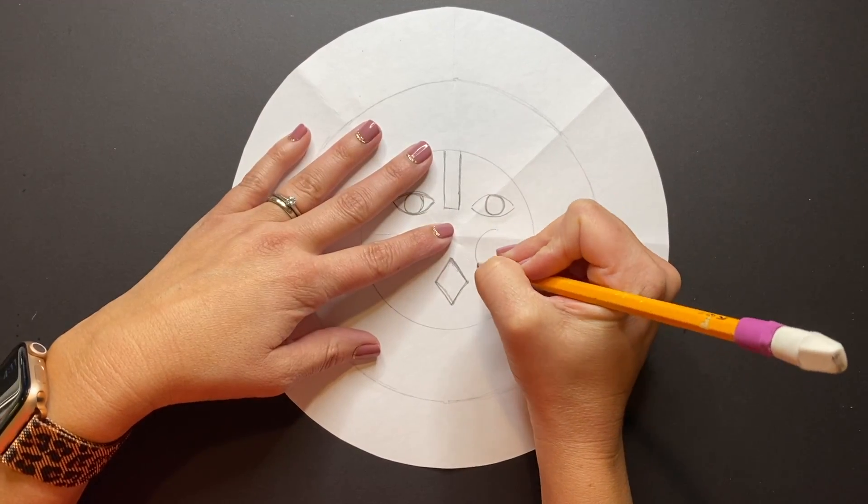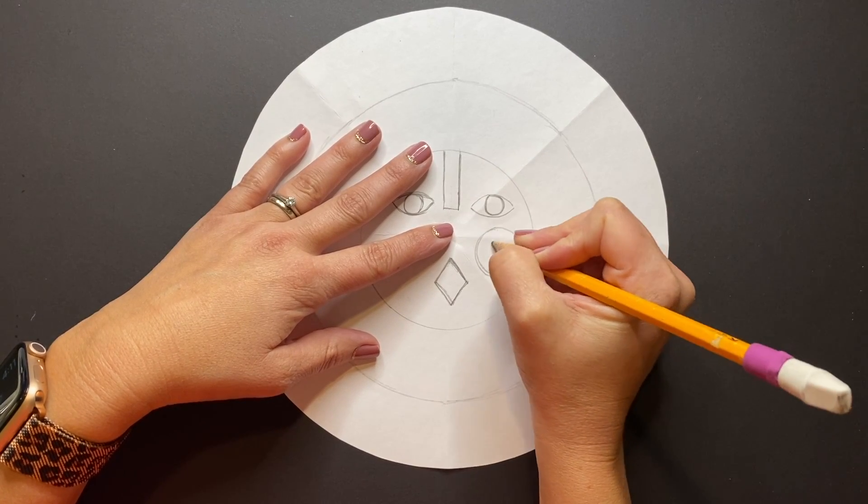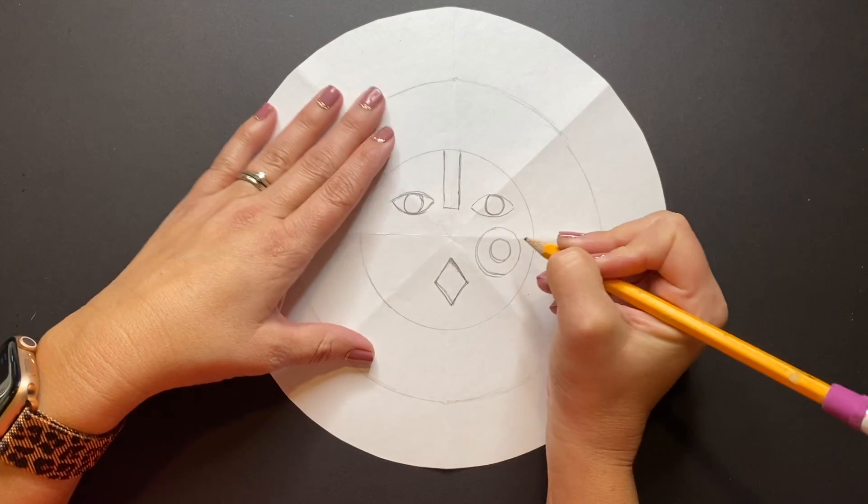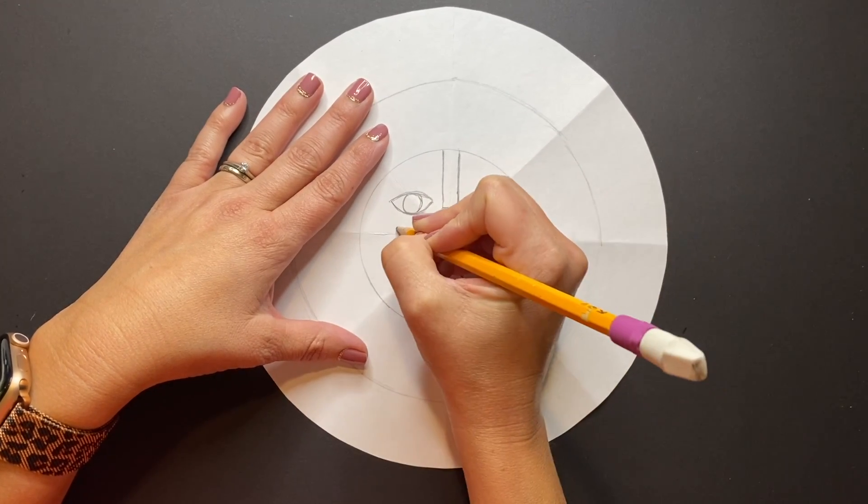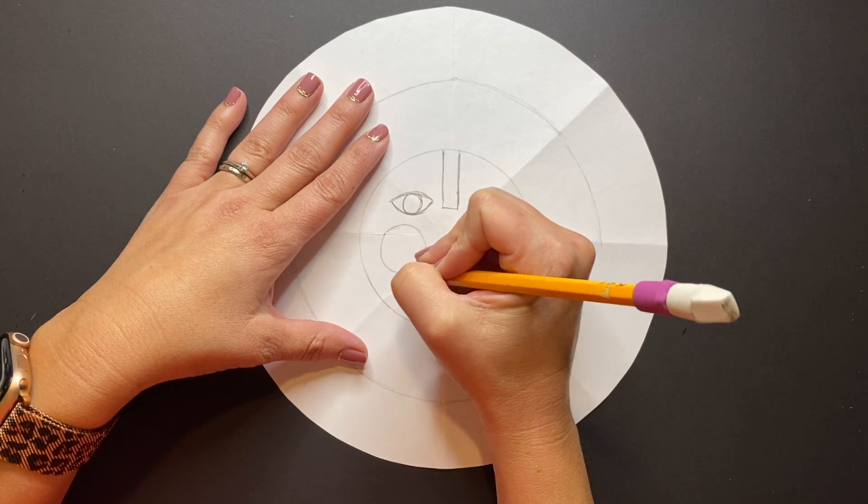Next we're going to create a cheek by creating one large circle on the right hand side and a smaller circle inside of that, and doing the same thing on the left side: a large circle with a smaller circle in the center.